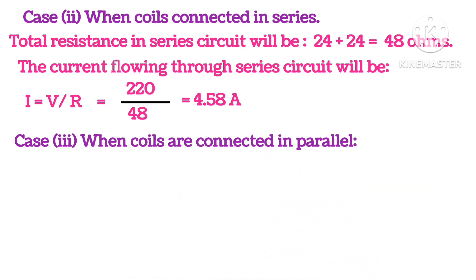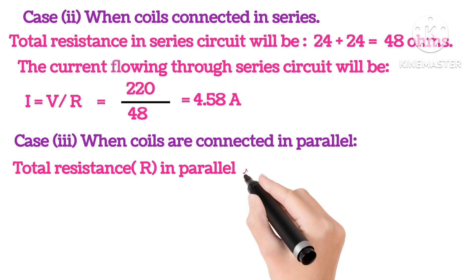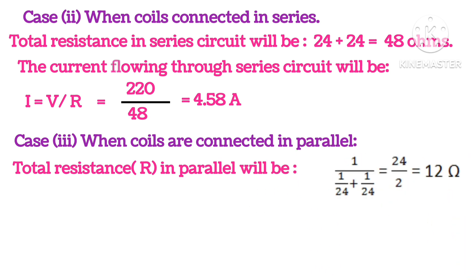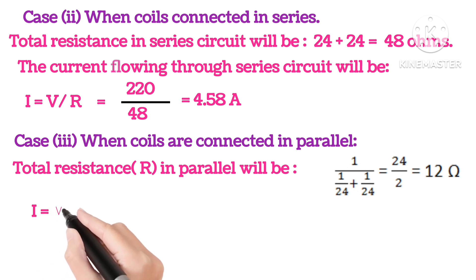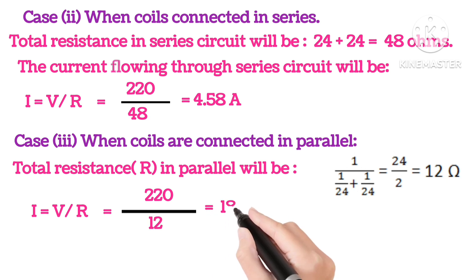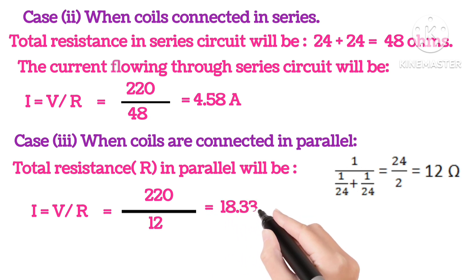Similarly, in the third case, when the coils are connected in parallel, total resistance in parallel will now be 12 ohms as you can see here. So putting in the values, I will be 18.33 ampere.